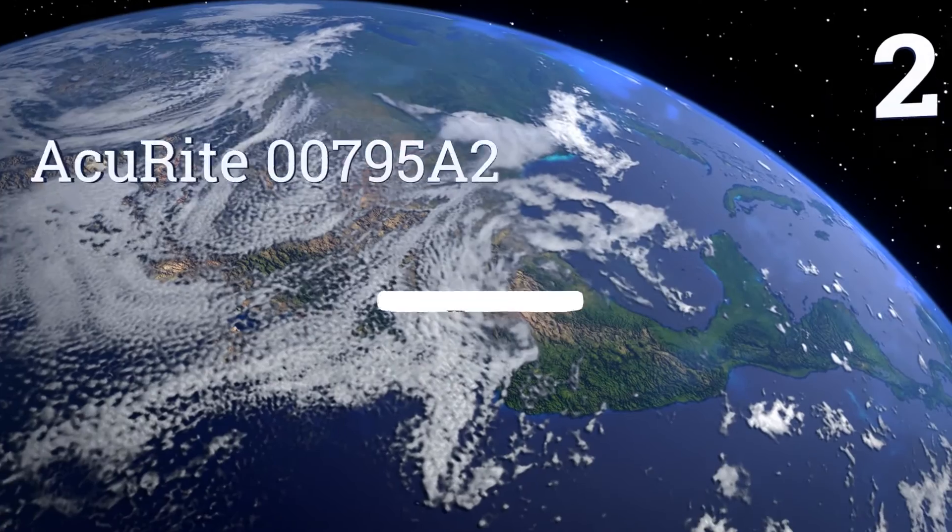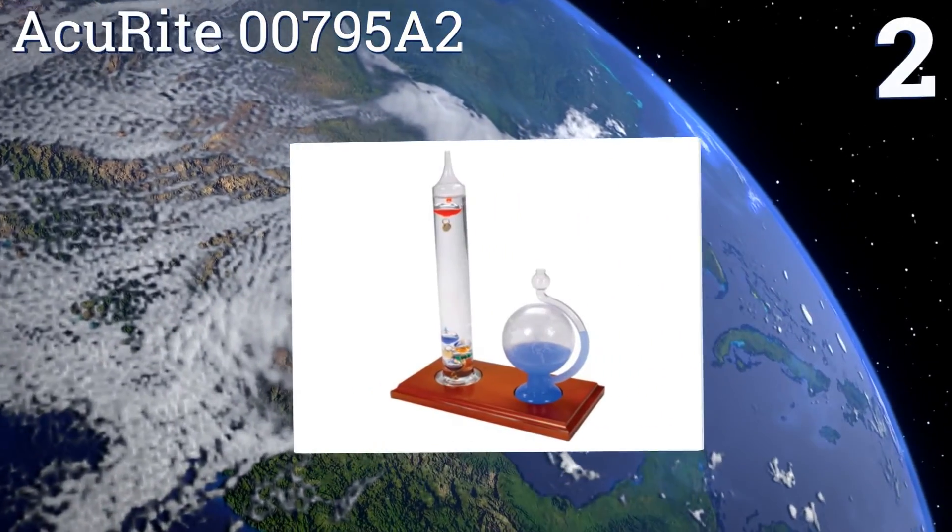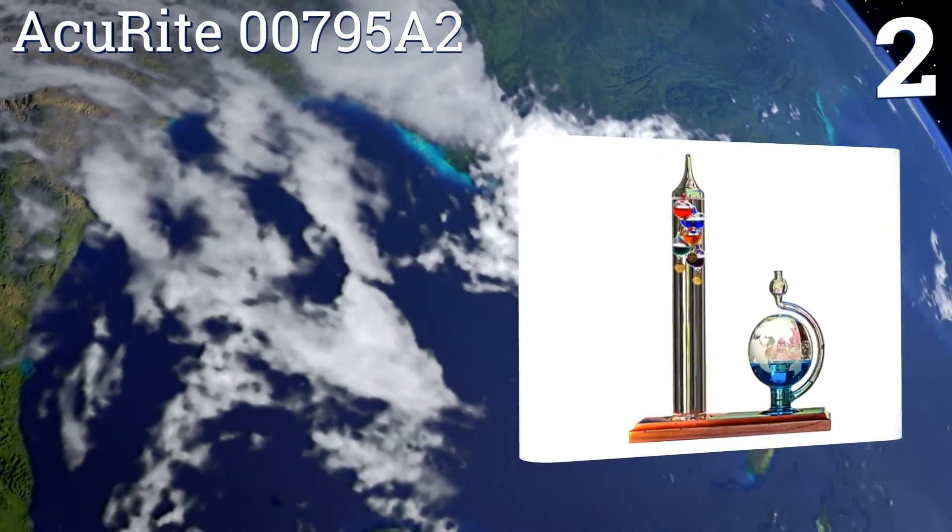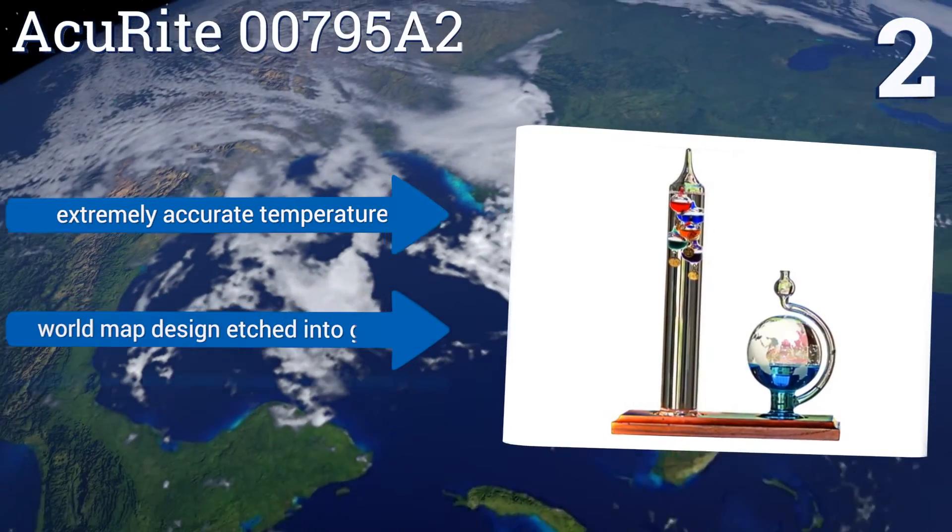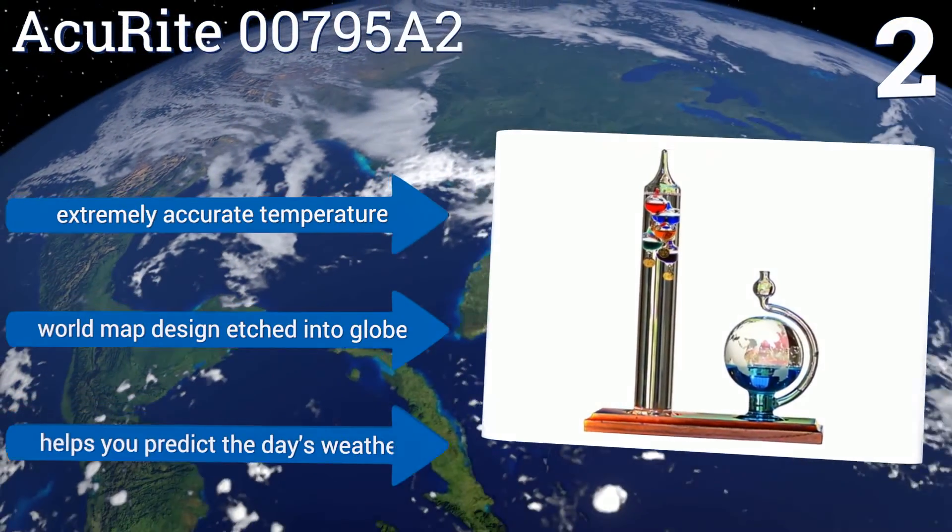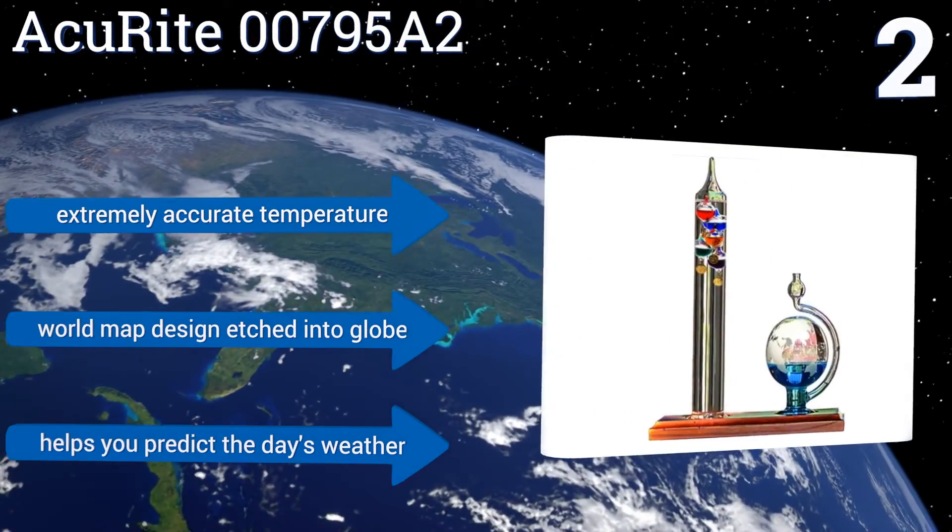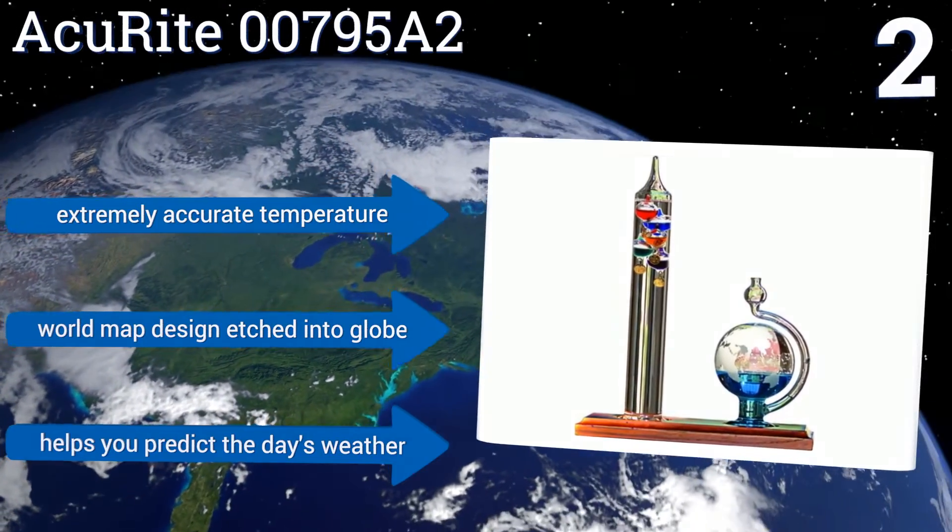At number 2, the Accurite 00795A2 comes with an equally handsome and functional glass globe barometer, and both are mounted on wooden bases. This pair of age-old measurement tools will make a striking tableau perched on your desk, shelf, or windowsill. It provides an extremely accurate temperature, and has a world-map design etched into the globe. It can help you predict the day's weather.